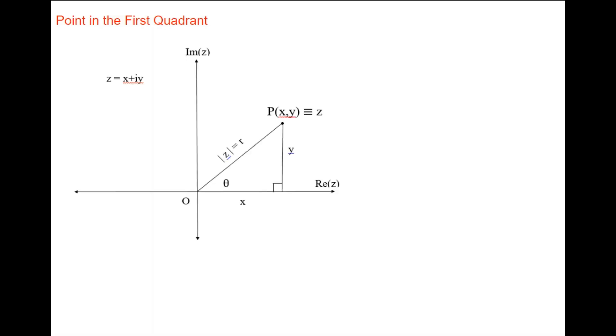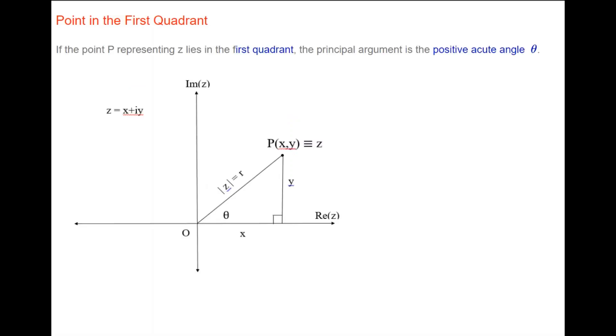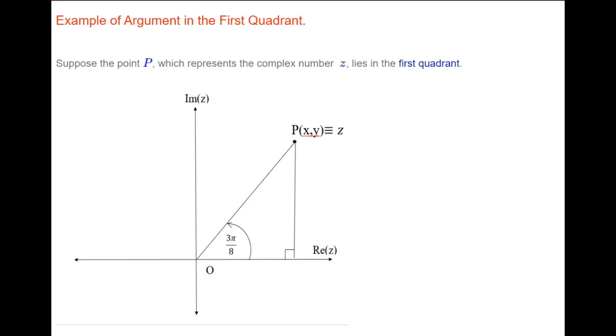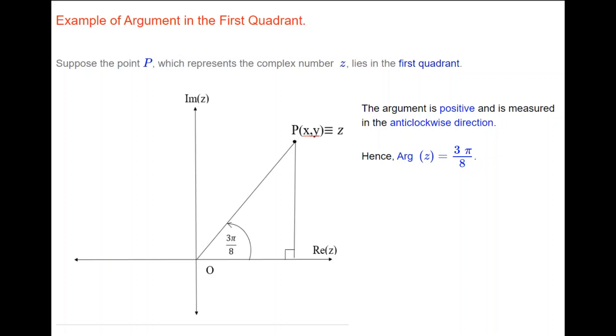Because the principal argument depends on the quadrant, I'll give an example in each of the four quadrants. If point P lies in the first quadrant, the principal argument is the positive acute angle theta. As an example, suppose the angle between the positive real axis and interval OP is 3π/8. The argument is positive, measured anticlockwise, so the argument of Z is 3π/8. If point P lies in the second quadrant, the principal argument is the positive obtuse angle theta.